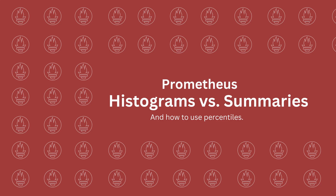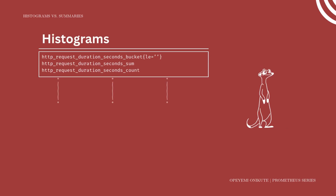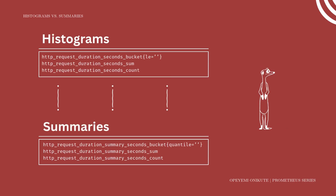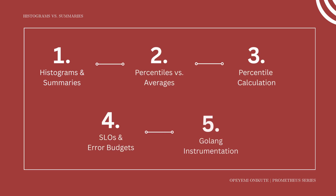Most monitoring systems measure how long something takes or how big it is, like response time or bandwidth. These metrics are best measured using distributions, not averages. Prometheus provides two advanced metric types for capturing distributions: histograms and summaries. This video explains more than five key concepts you need to know about histograms and summaries in Prometheus.